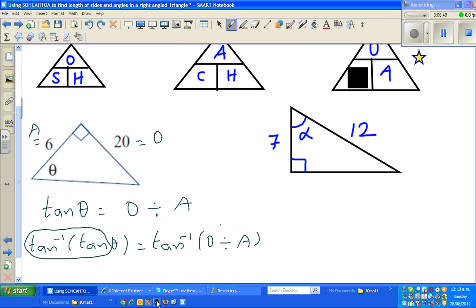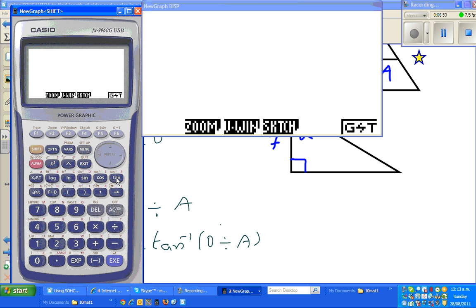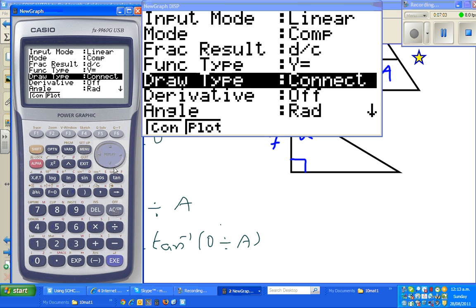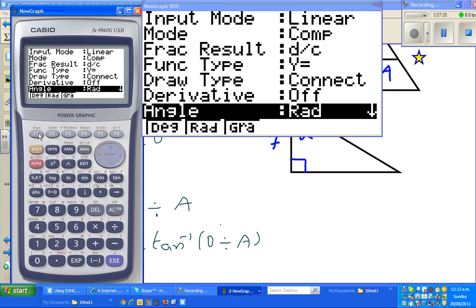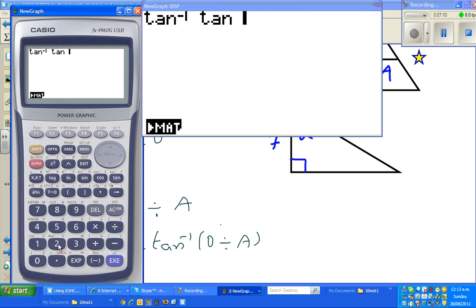I showed this in the previous video. Just to repeat it, shift tan of tan 45 would give me 45. So this and this gets cancelled out.